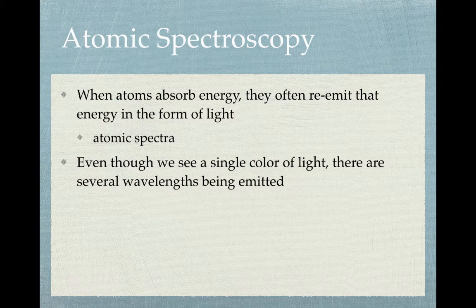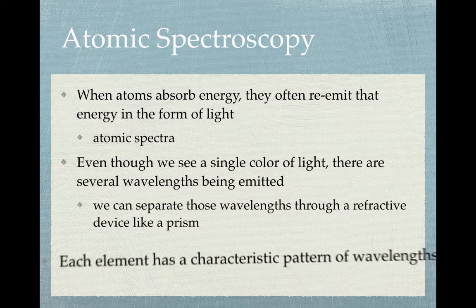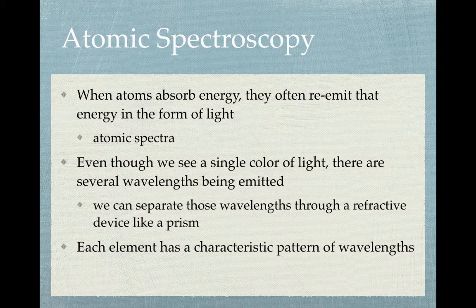When we look at an excited sample of a gas, what we see is just a single color of light, because several colors within the visible spectrum blend together. But in fact there are several different wavelengths being emitted. Using a refractive device like a prism, we can separate those wavelengths. Each element, when excited, gives a characteristic pattern of wavelengths, and that is what we call an emission spectrum.